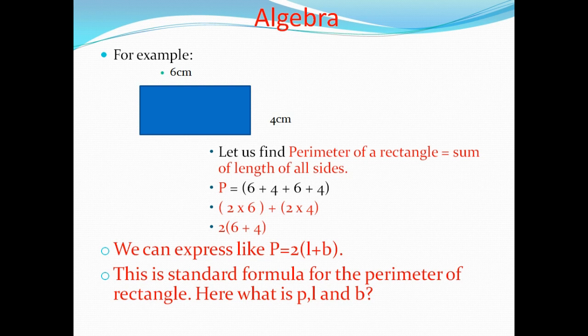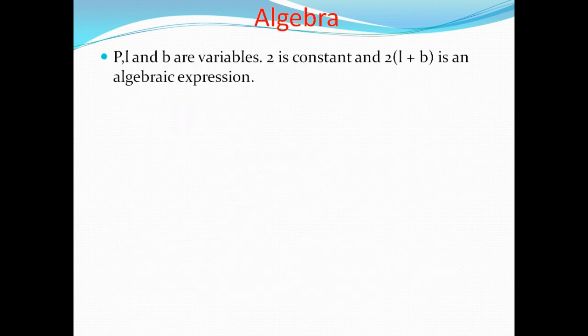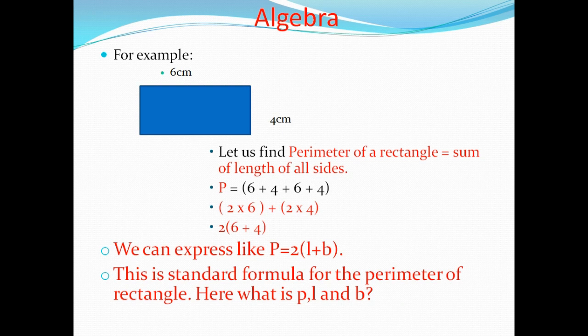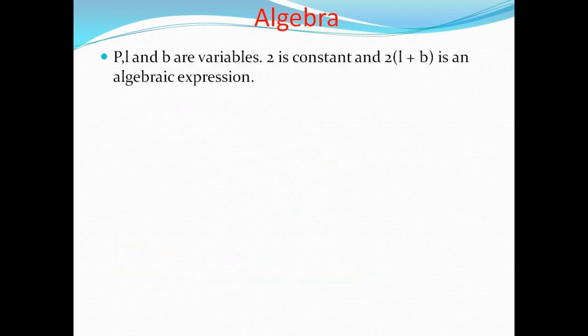How? Here, what are P, L, and B? They are called variables. P, L, and B are variables. In that standard formula for perimeter, we used some variables, some constants, and some operators. The variables are P, L, and B. The constant is 2. And 2(L + B) is an algebraic expression.